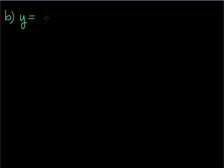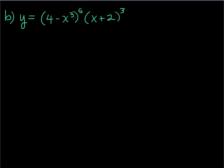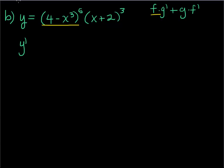Let's do one more example with the product rule. Here's another reason we might want to use it — if we have something more complicated, like 4 minus x cubed to the 5th times x plus 1 cubed. If we didn't have the product rule, we would actually have to foil this out, which would give us something like x to the 45th power. So let's use the product rule instead, where my first function is 4 minus x cubed to the 5th.